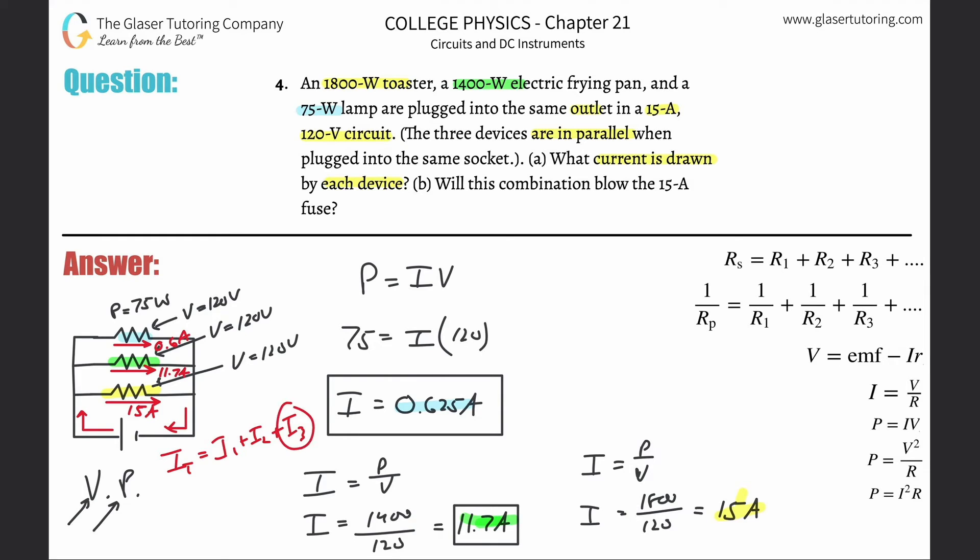So the total current flowing through the circuit is now going to be 15 plus 11.7 plus 0.625, and we get 27.325 amps of current flowing.